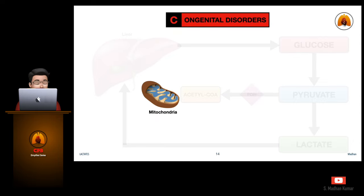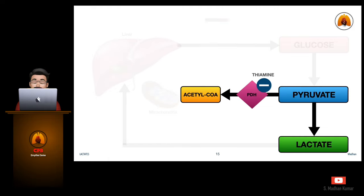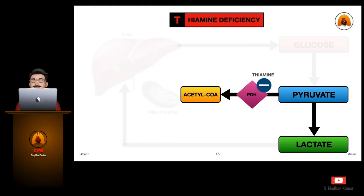Pyruvate conversion to acetyl coenzyme A for oxidative phosphorylation is impaired when mitochondria are not functioning well. One cause for this is congenital disorders, especially in infants. Thiamine is an important cofactor in the function of pyruvate dehydrogenase, and if thiamine is deficient, PDH won't work properly, so pyruvate will get converted into lactate.